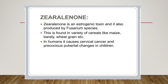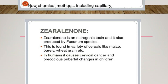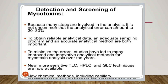The last one is zearalenone. Zearalenone is an estrogenic toxin also produced by Fusarium species. It is found in a variety of cereals like maize, barley, wheat, and other grains. In humans it causes cervical cancer and precocious pubertal changes in children. It is mainly found in maize.